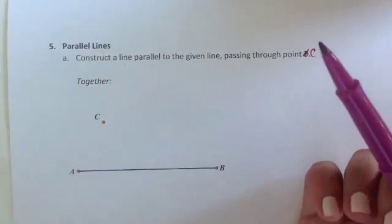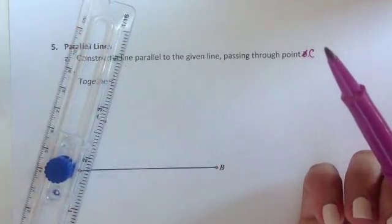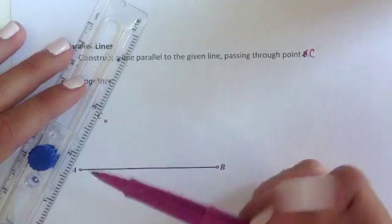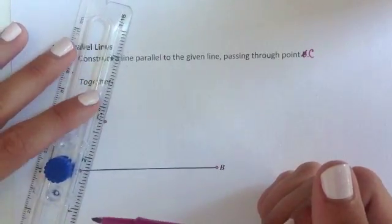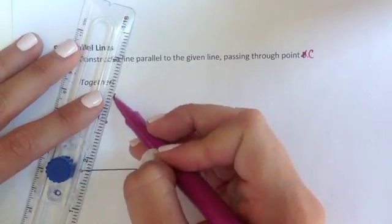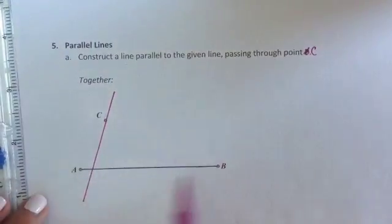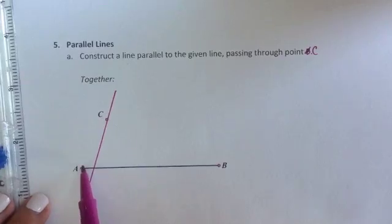Your first step with this construction is to connect C to your given line. If there's an endpoint you're welcome to connect it to the endpoint. If there's not, then just connect it somewhere on the line, and that's what I'm going to do here because in most cases you'll have a line that extends infinitely with an arrow and not an endpoint.